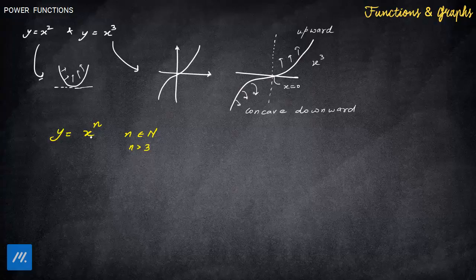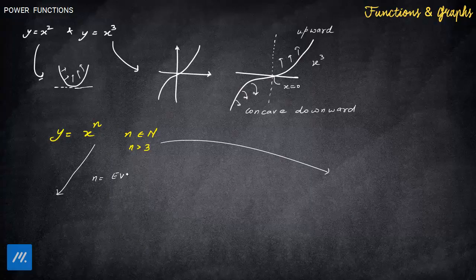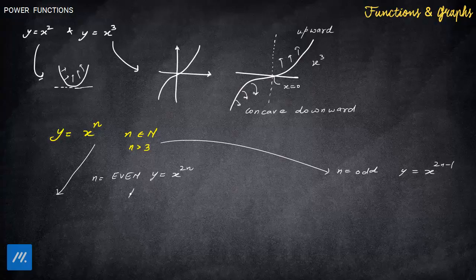So now our target is to find out x raised to power n. How are you going to divide this? We are going to divide this into two branches: one is when n is equal to even and one when n is equal to odd. If we go in detail, this is nothing but y is equal to x raised to power 2n sort of thing, and this is x raised to power 2n minus 1 or plus 1 sort of thing.